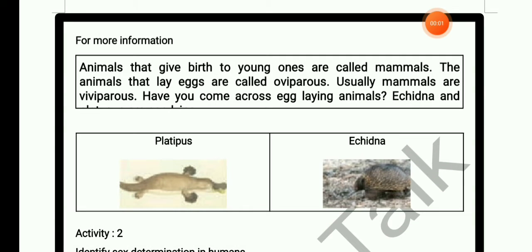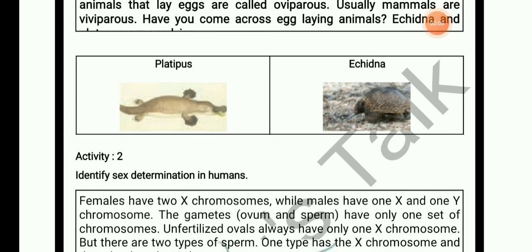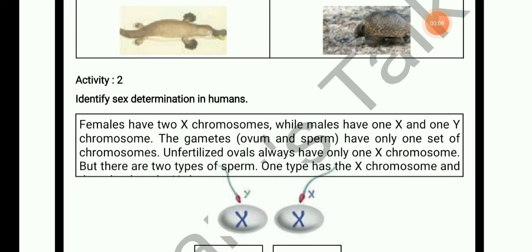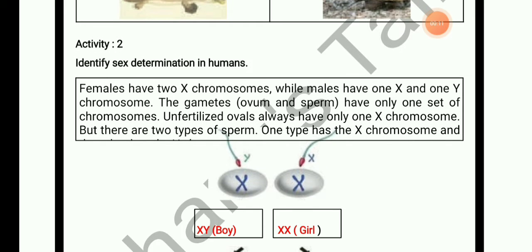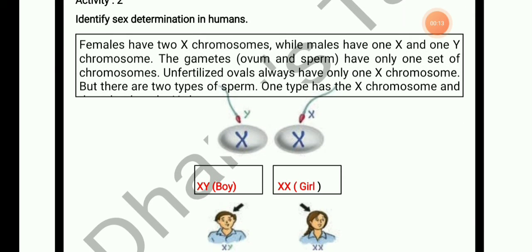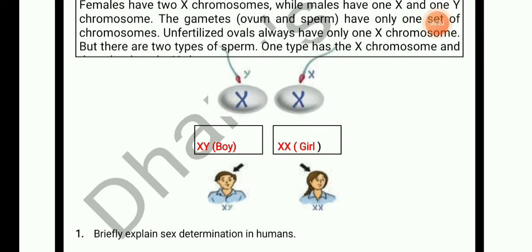Animals that give birth to young ones are called viviparous; animals that lay eggs are called oviparous. Usually mammals are viviparous. Activity 2: identify sex determination in humans. In humans, 23 pairs of chromosomes are present, and one pair is the sex chromosome. Males have XY chromosomes and females have XX chromosomes.